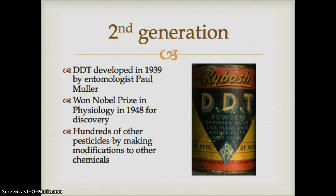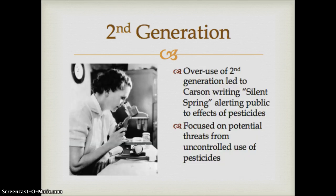Our second generation pesticides began in 1939 when entomologist Paul Mueller developed DDT. Since that time, hundreds of other pesticides have been made by modifying other chemicals. One of the things we've discussed is the overuse of these second generation pesticides, developed in the 1940s and 50s. Then in the early 1960s, Rachel Carson wrote Silent Spring, alerting the public to the effects of pesticides.